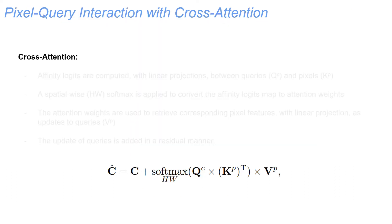In this pixel-query interaction process, cross-attention plays a crucial role. Conceptually, queries are updated by the following steps. First, it computes a feature affinity between queries and pixels. Afterwards, it applies a softmax on the spatial dimension, converting the affinity logits into attention weights. Next, the attention weights are used to retrieve pixel features as an update for corresponding memory query. Last, the memory query is updated in a residual manner.